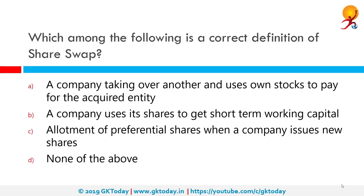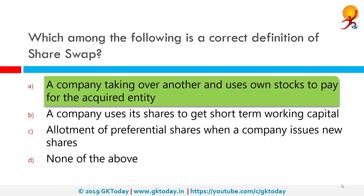Which among the following is the correct definition of a share swap? The correct answer is a company taking over another and using its own stocks to pay for the acquired entity. Company A buys shares of Company B, and in order to pay Company B, gives them its own shares. A share swap is an exchange of one equity-based asset for another during a merger or acquisition. A stock swap provides an opportunity to pay with shares rather than with cash.